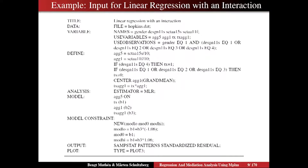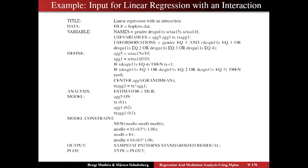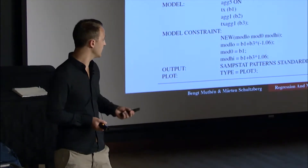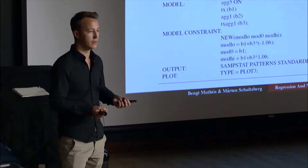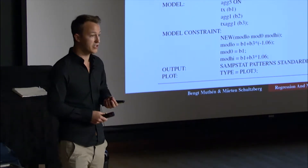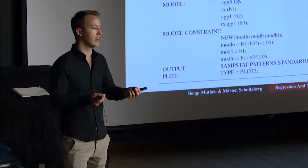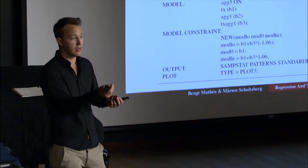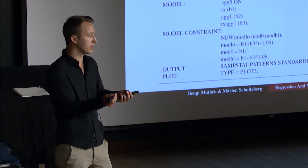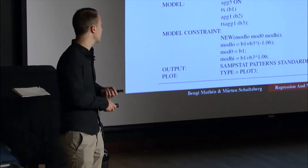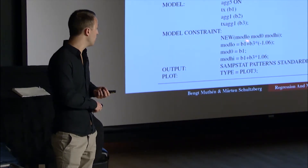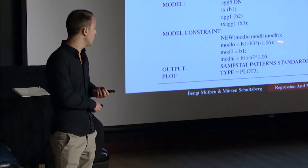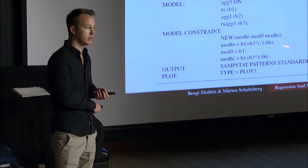Why do we name these slopes? In the model constraint, we're going to create functions of these parameters. The model constraint can be used for many things — what we want to do here is calculate the treatment effect for different values of the moderator. The moderator is the baseline aggression. We want to see what the treatment effect is at a high value, at the mean, and below the mean of baseline aggression. So we create three new parameters: mod_low, mod_zero, and mod_high.